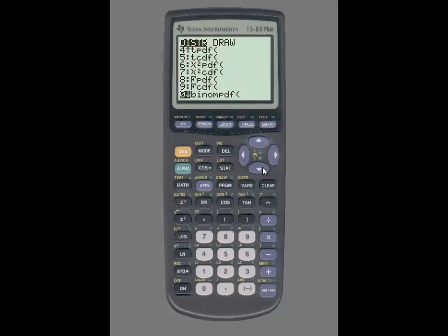Scroll down until you see binomial PDF, and with binomial PDF on the home screen, you're going to enter in n, comma, p, comma, x in that order.